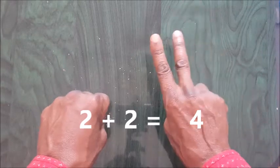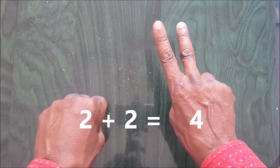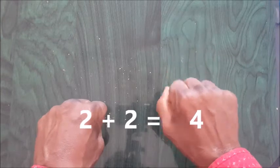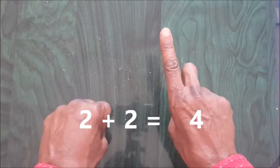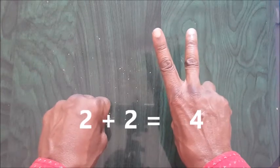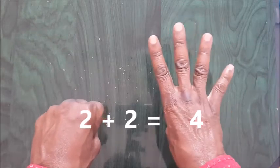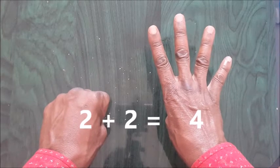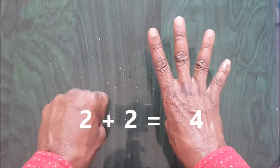We have 2 plus 2. One, two. Already I have 2 plus 2. That means 1, 2. So 2 plus 2, 1, 2. That means 4. 2 plus 2 equals to 4.